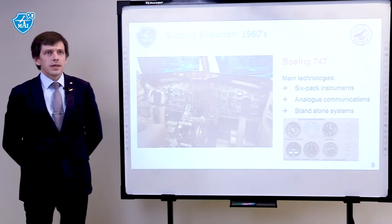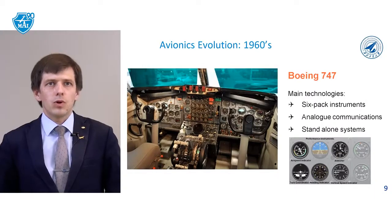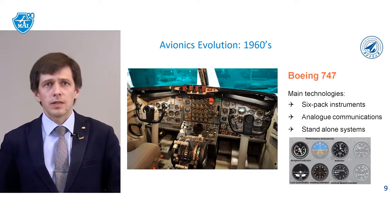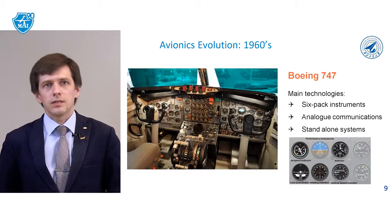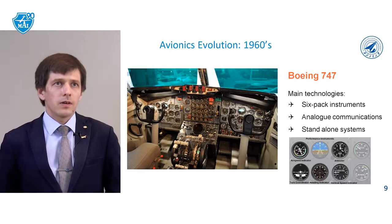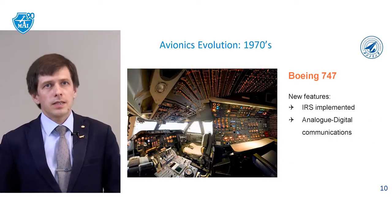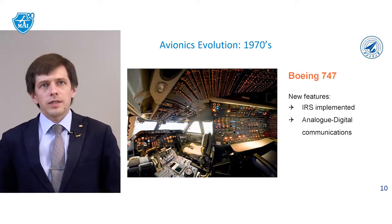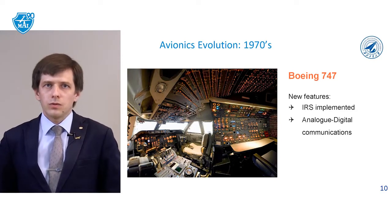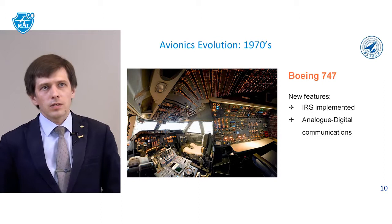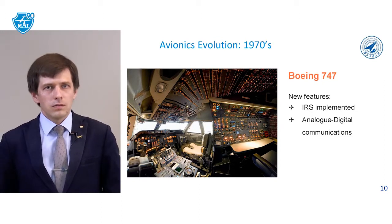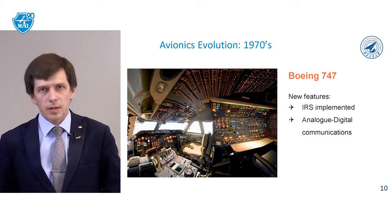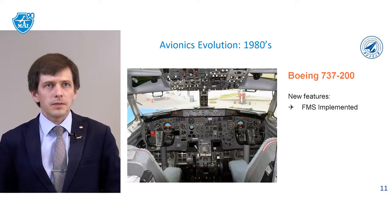Avionics began in the 1960s, for example on the Boeing 747. The main technologies were six-pack instruments, analog communications, and standalone systems. Next, in the 1970s, IRS was implemented and analog-to-digital communications began. More and more electrical units inside the cockpit can be found on the slide.